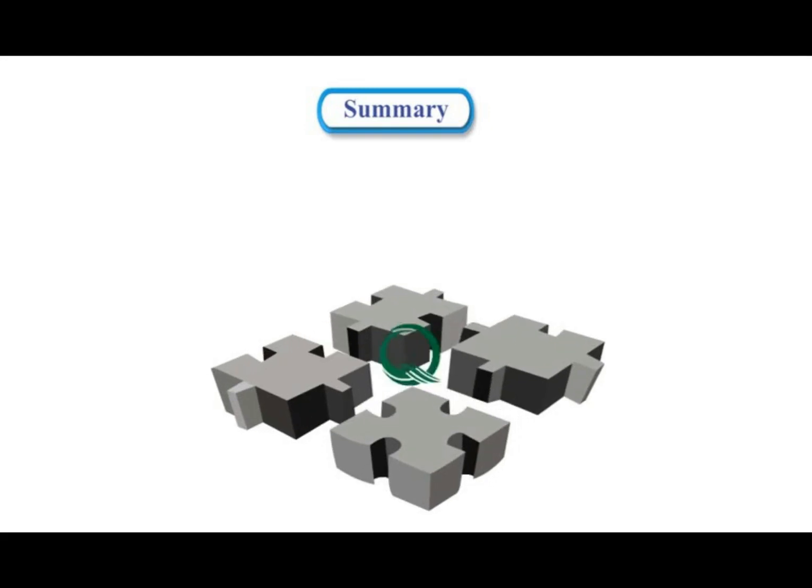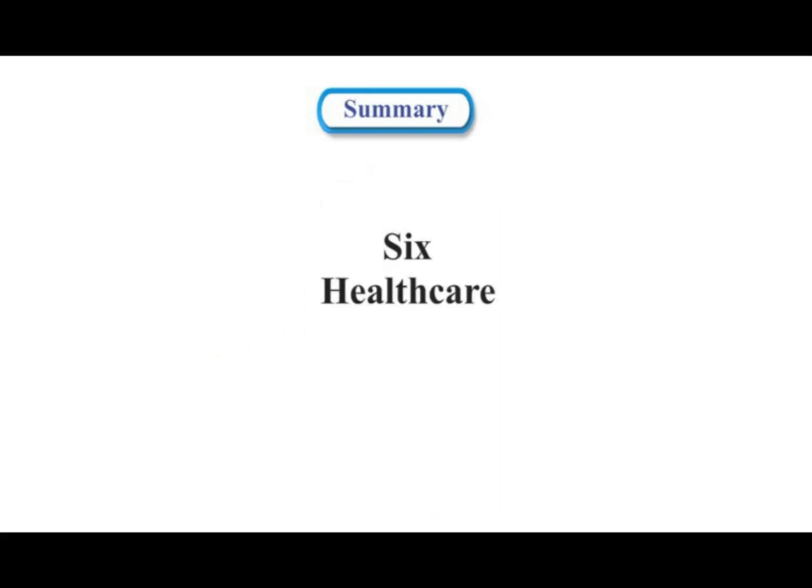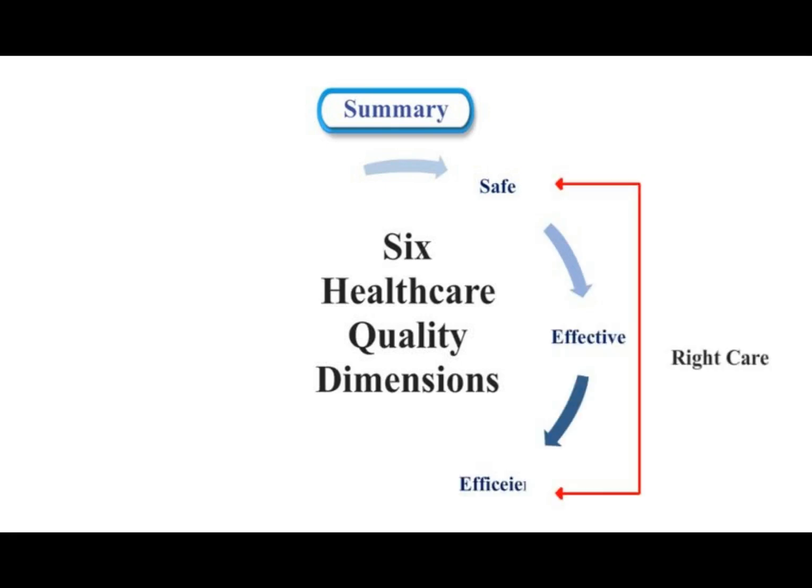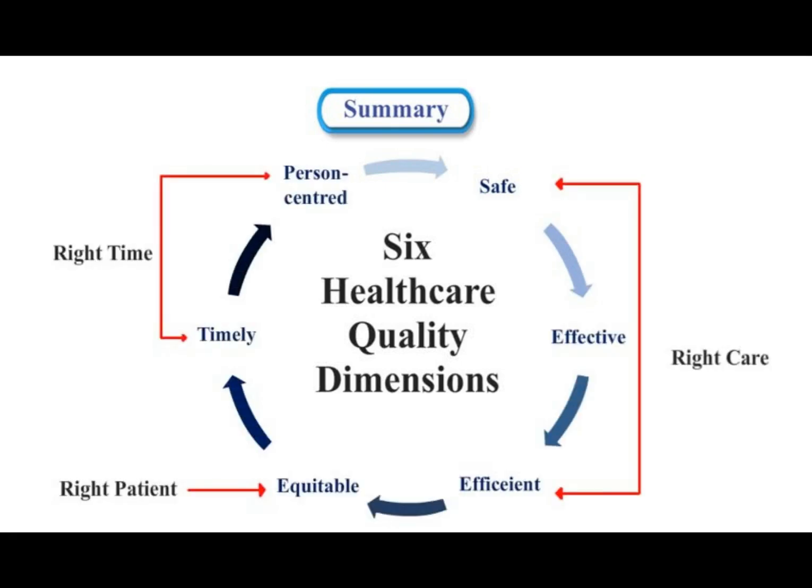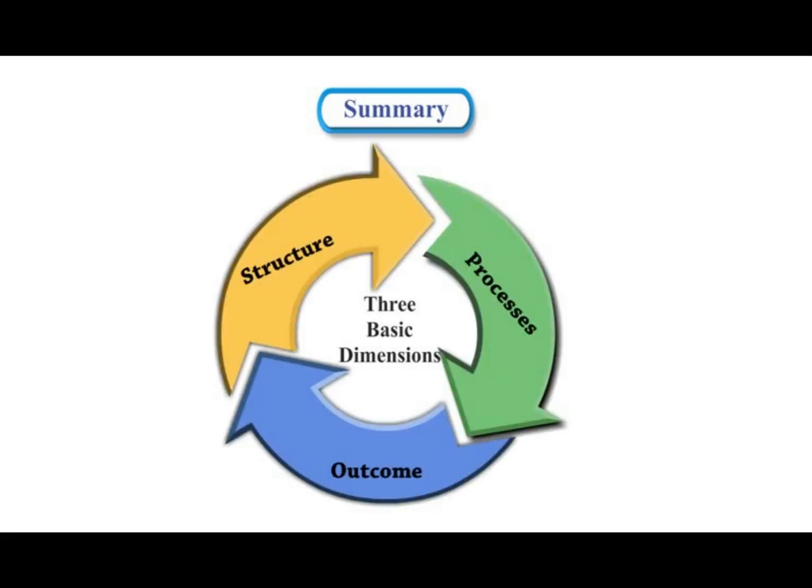Quality was institutionalized. In the few years since the turn of the century, the quality movement seems to have matured beyond total quality into service, healthcare, education and government sectors. Healthcare quality is giving the right care to the right patient at the right time, every time. There are three basic dimensions to this: structure, processes and outcome.